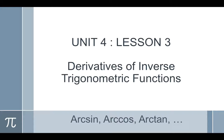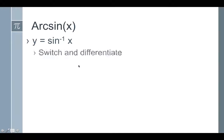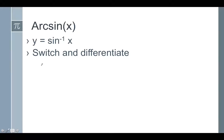You need to remember first of all that arcsine is the same thing as y equals sine inverse of x. We're going to actually calculate the derivative of this function using stuff we've learned already. This lesson comes after implicit differentiation because we're actually going to use implicit differentiation. We're going to switch and differentiate — if y is equal to the sine inverse of x, that means x is equal to the sine of y.